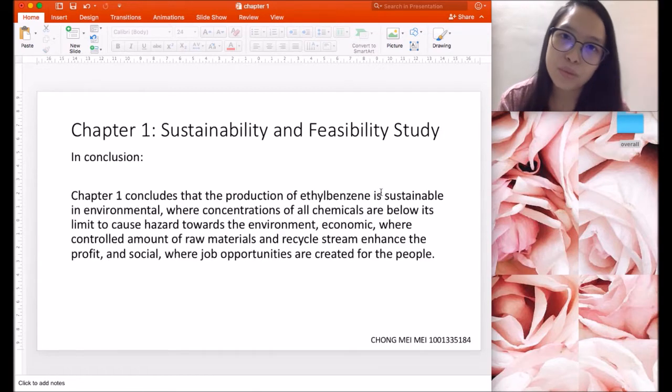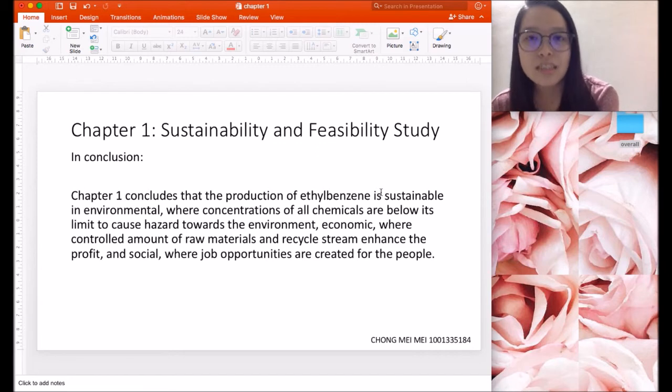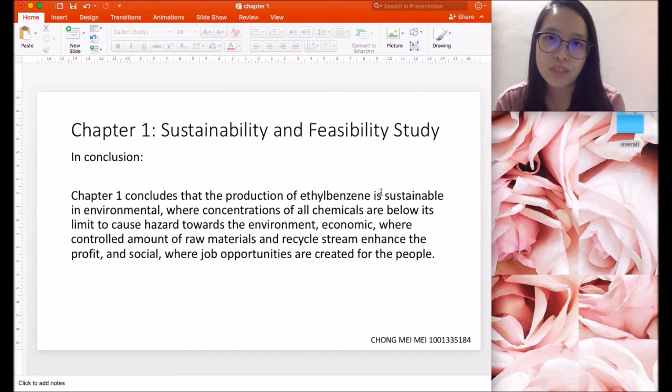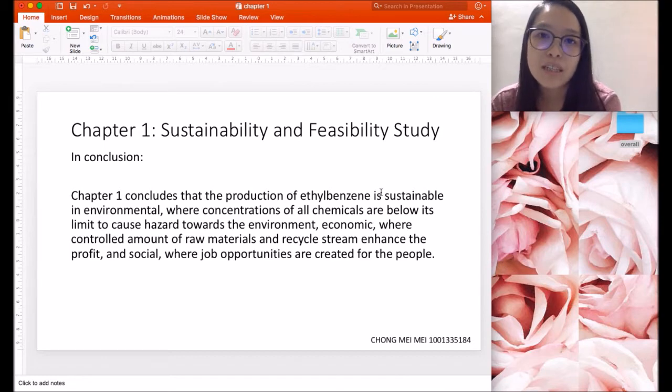In conclusion of chapter 1, ethyl benzene is sustainable because of its insufficient concentration to react with the atmosphere to produce harm. With controlled inlet of raw materials and recycling of diethylbenzene, it produces more profit. With expanding manufacturers, more job opportunities close the gap between poor and rich. Their housing and infrastructure are provided and their safety is protected. Next, I'll pass to Hari Prashan to talk about chapter 2.